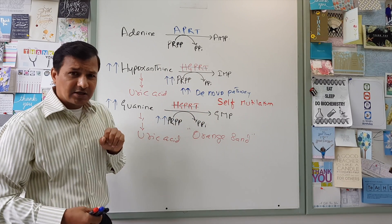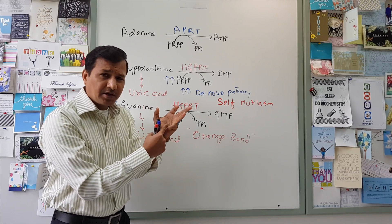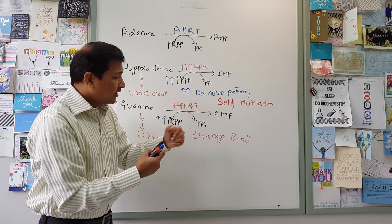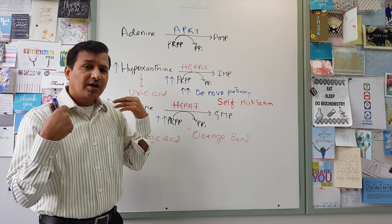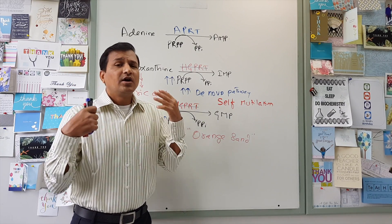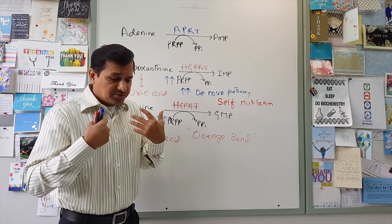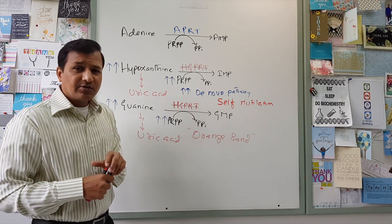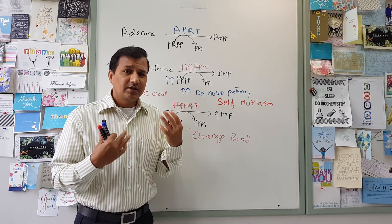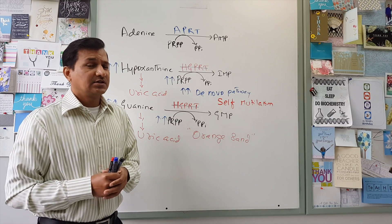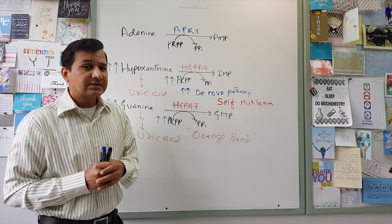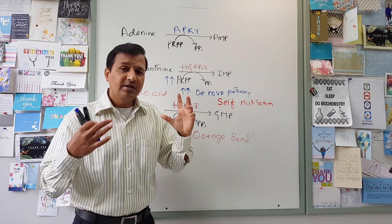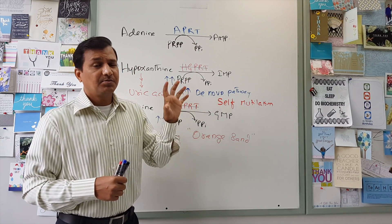So these are some of the signs that are seen in Lesch-Nyhan syndrome. So we have seen self-mutilating behavior, patient has a low IQ, patient has got orange sand in the urine, which are uric acid crystals. There can be nephrolithiasis, obstructive uropathy, that is obstruction in the urinary tract, can be seen because of the stones there, and patient will have movement disorders like chorea, athetosis, and ataxia. Signs and symptoms can be seen in Lesch-Nyhan syndrome, and that is all because of the complete absence of purine salvage enzyme, that is HGPRT enzyme.